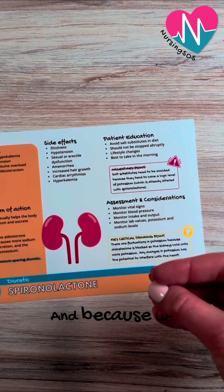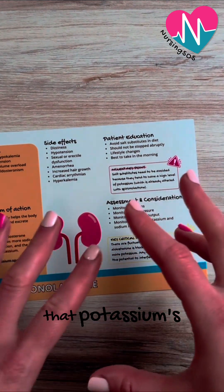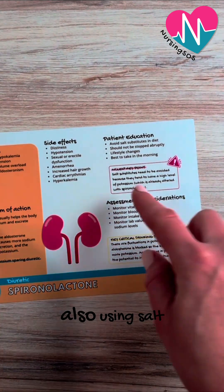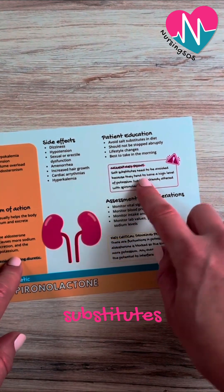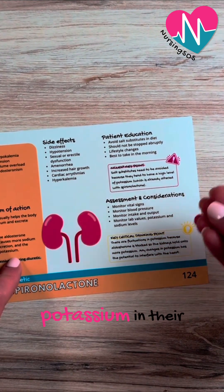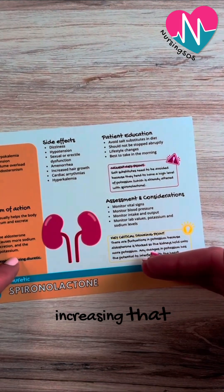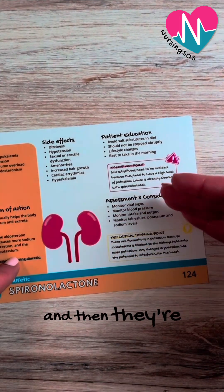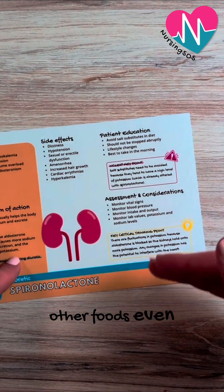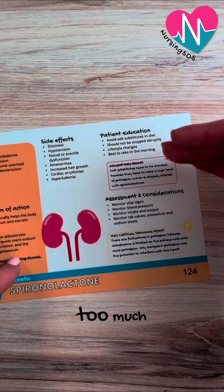When a patient is taking spironolactone, potassium is already being retained in the body. So if they're also using salt substitutes in their food, they're going to have an increase in potassium. If the medication is increasing that potassium level and they're also having salt substitutes or other foods high in potassium, it could elevate that potassium level too much.